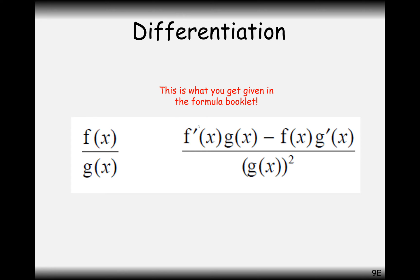You differentiate the top first, times by the bottom. Then you subtract the top function multiplied by the derivative of the bottom function. Then you divide all of that by the denominator function squared — the g function squared. That's the rule; make sure you've got it to hand when doing these types of questions.